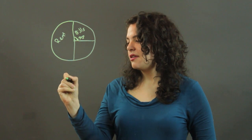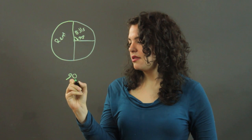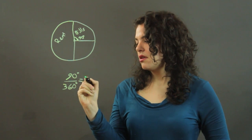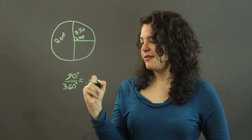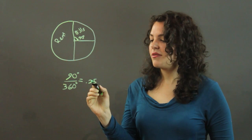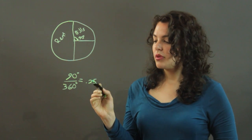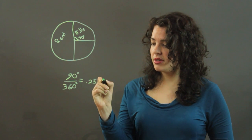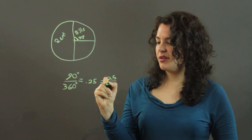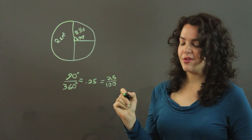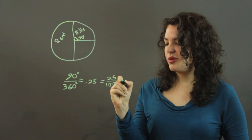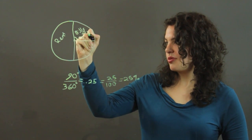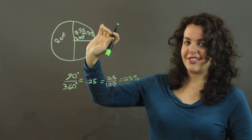We find that 90 over 360 gives us 0.25. This is the decimal that we're looking for. This tells us what the percentage is. So if the decimal is 0.25, or we can also say 25 one-hundredths, that's the fraction form of our decimal, we know that we have 25% here. So this can be labeled as 25%.